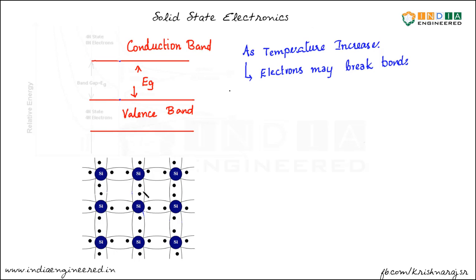These electrons are free to move anywhere in the crystal. This electron came out of the bond and is free to move anywhere in the crystal. This same phenomenon can be considered as an electron from the valence band moving to the conduction band — an electron initially at a certain energy level moves to the conduction band. We can consider this breaking of bond as an electron transition from valence band to conduction band.